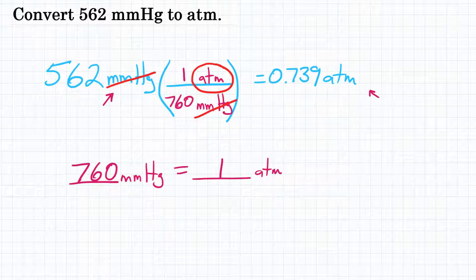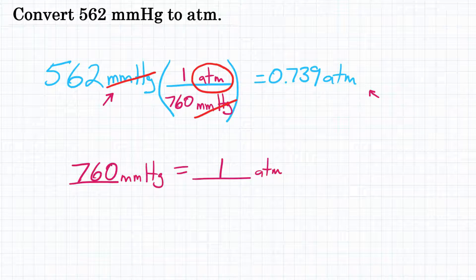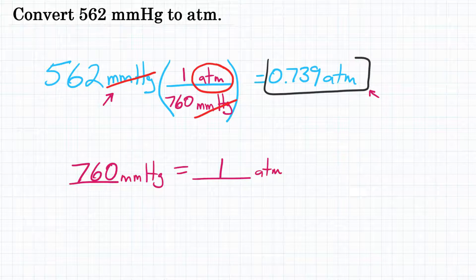Okay, there you have it. Final answer for converting 562 millimeters of mercury to atmospheres would be 0.739 atmospheres.